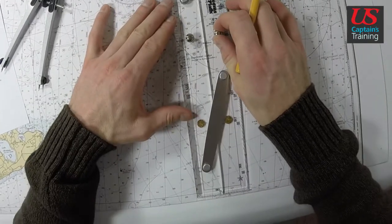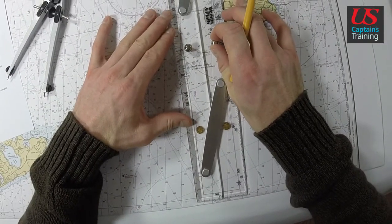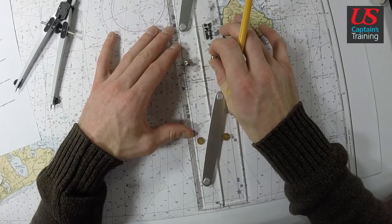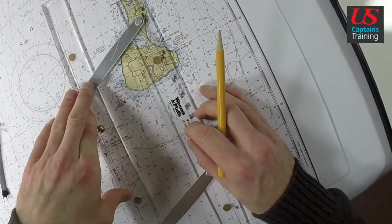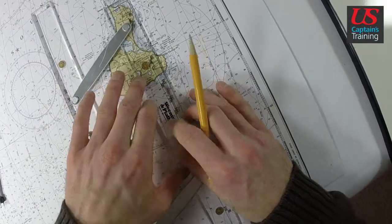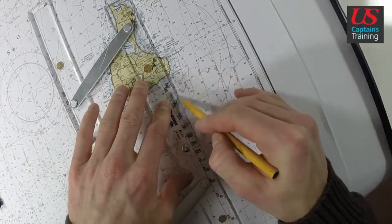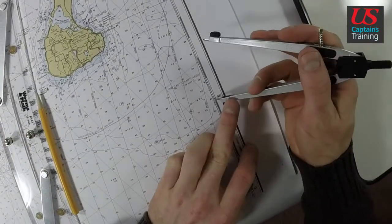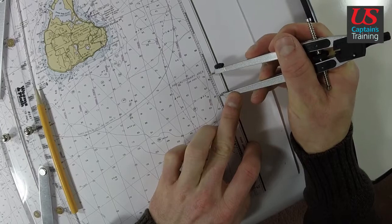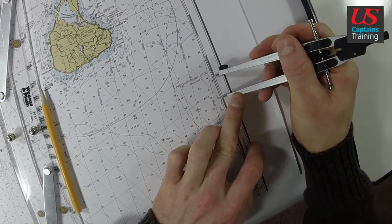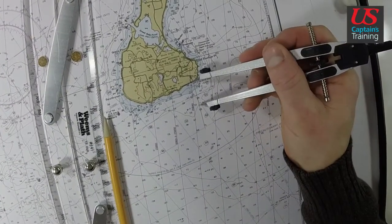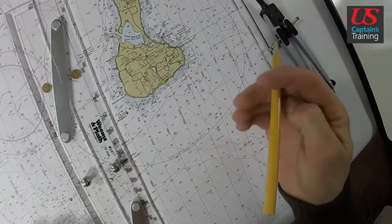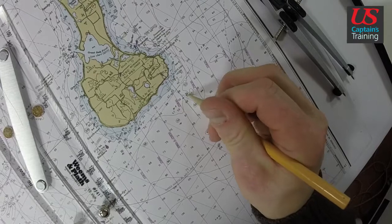Line our parallel rules up north and south because we need to be due south. Walk over here. Draw a line from the dot at least one nautical mile long. Get our dividers again. We're going to take a distance off the latitude scale. One nautical mile. One nautical mile down this line that's due south. Make a mark. Mark that. This is our ending point.